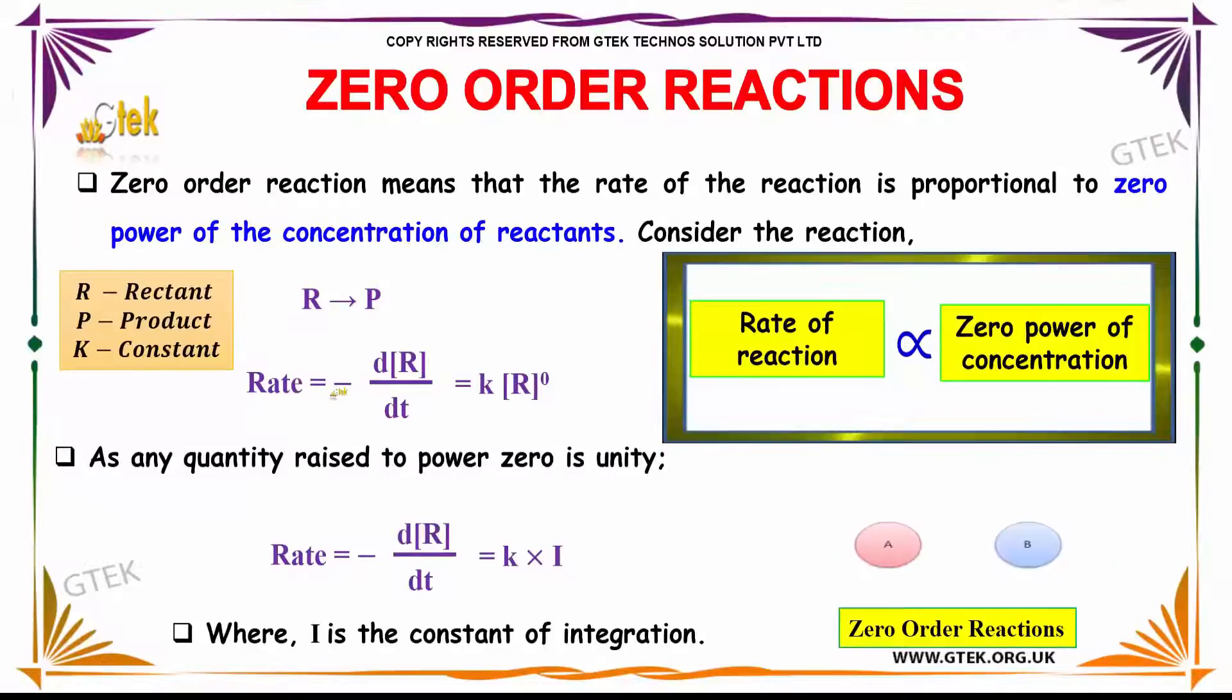Rate is given by minus d[R] divided by dt. Minus indicates it is degrading. So k into R power zero. Any quantity raised to power zero is unity, so k into 1, which is nothing but constant of integration. The rate of reaction is directly proportional to zero power of concentration. This is zero-order reaction.